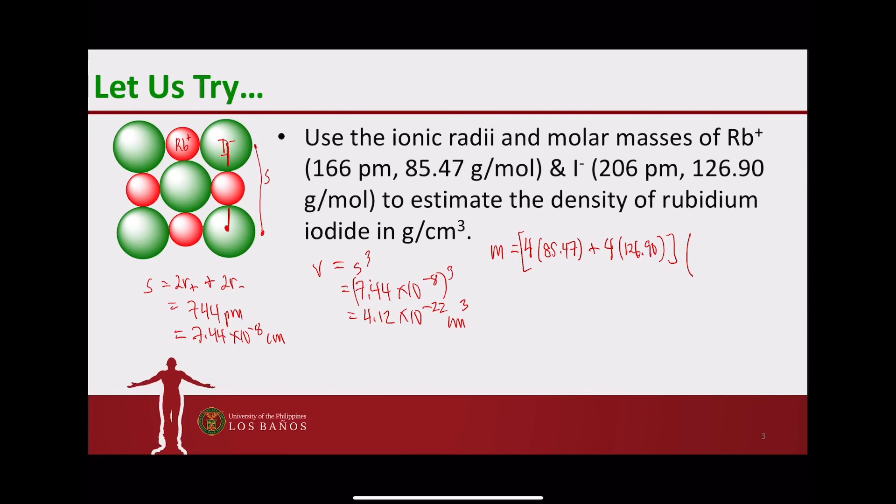So we have for every one mole of ions, 6.02 times 10 to the 23 ions. So if you do the math here, you will arrive at 1.411 times 10 to the minus 21 grams.